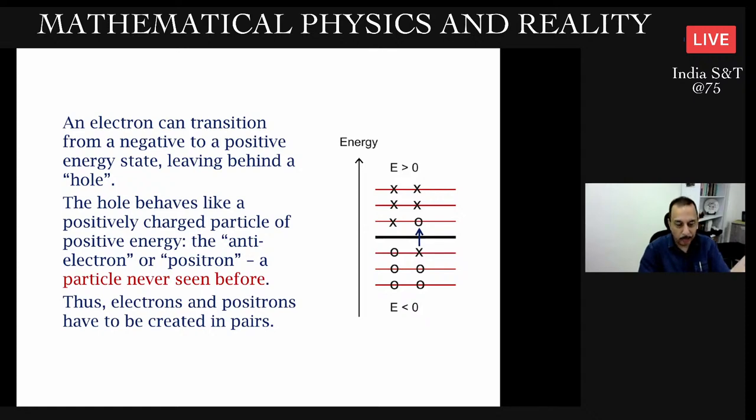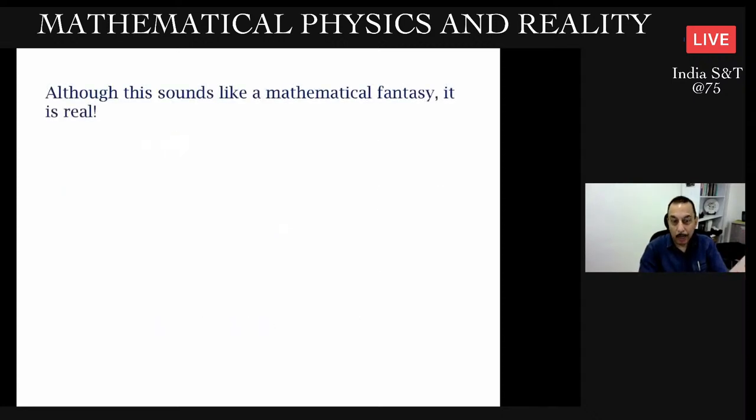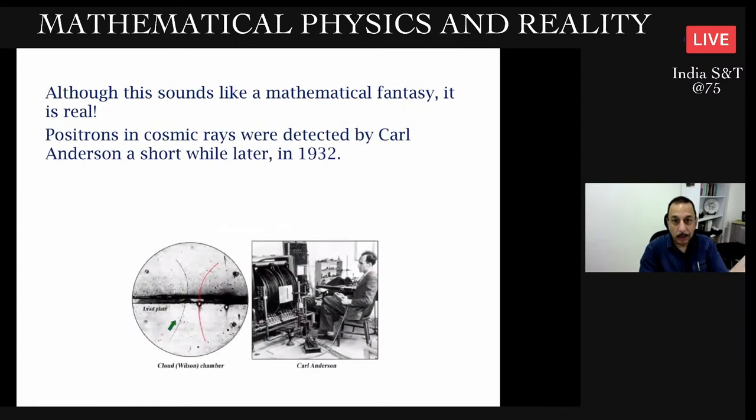Physicists at that time were very negative about proposing things which have not been seen, and then making up rules which also have not been seen. It sounded like a mathematical fantasy, but turns out it's pretty real. A few years later, Carl Anderson detected positrons in cosmic rays. What you see is the red track in this Wilson cloud chamber. The black one is that of an electron bending in a magnetic field. Because the positron has opposite charge, it bends the opposite way.